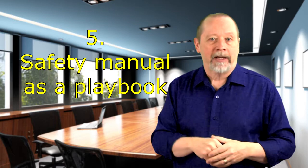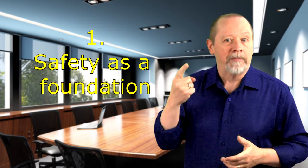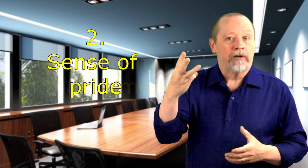The fifth way to marry production and safety is to use the safety manual as a playbook. So let's review the five points. Get into the mindset that safety is not something you add to the job. Create a sense of pride in the quality of your work. Look at the work as a team sport and focus in the moment.